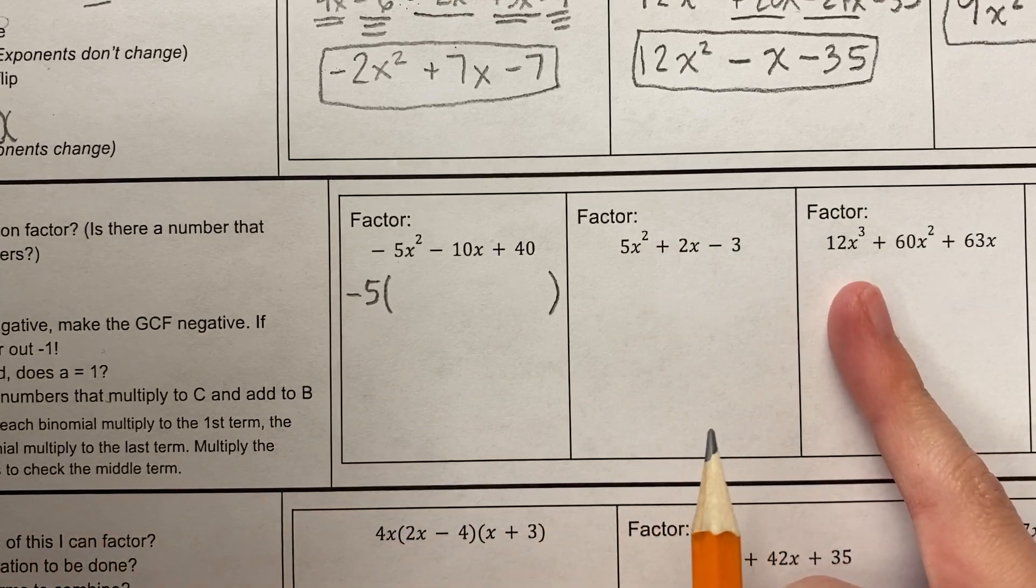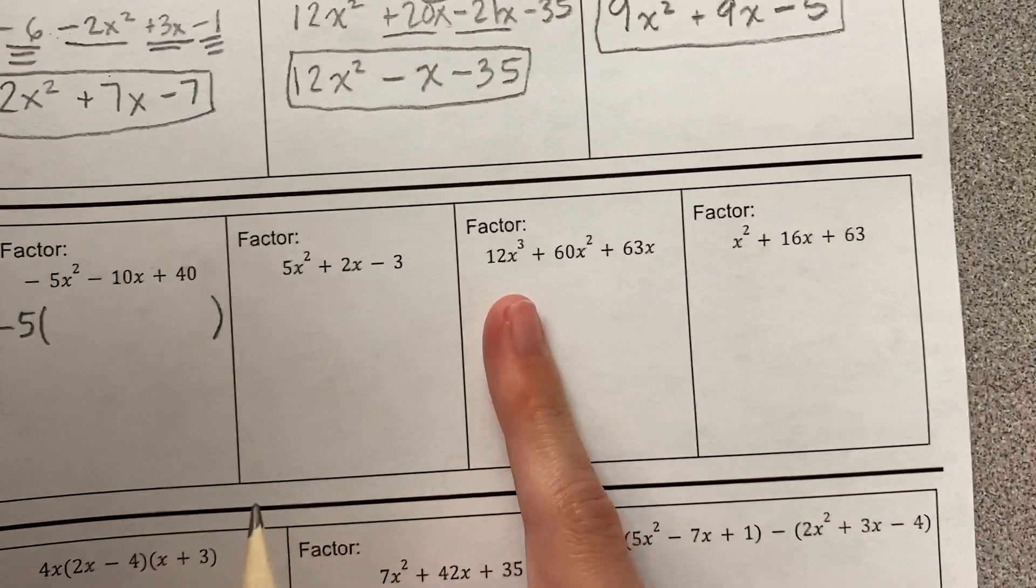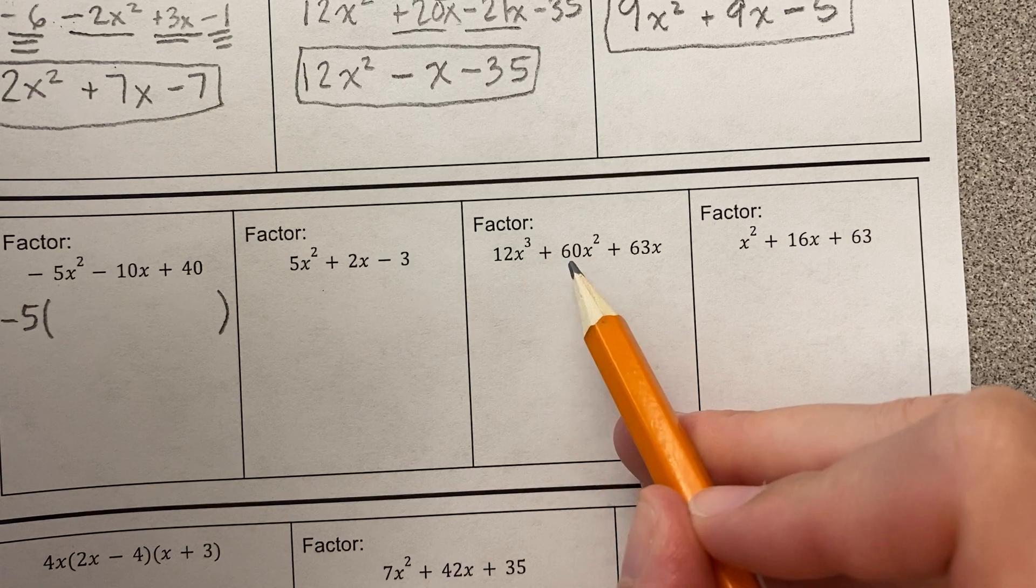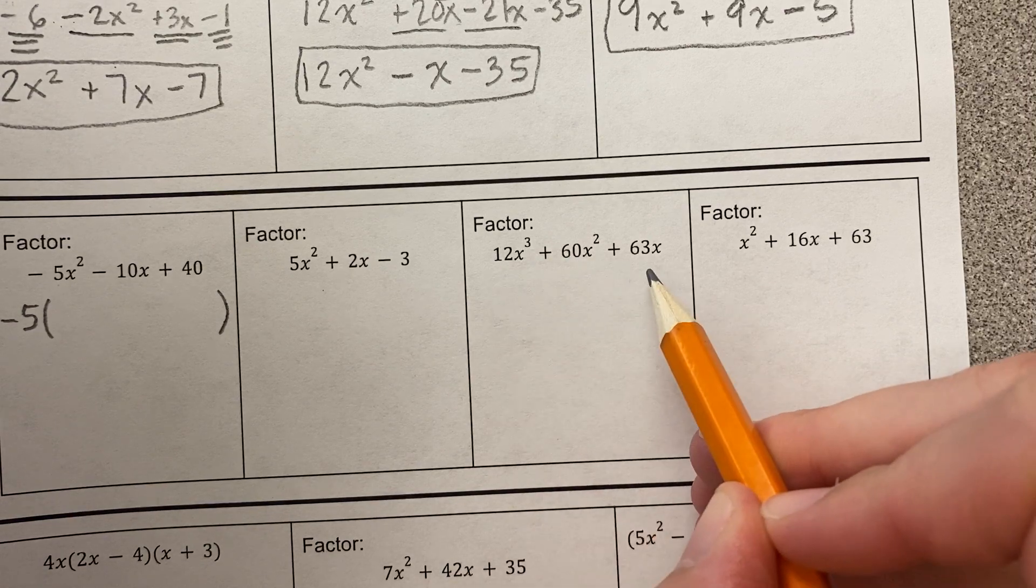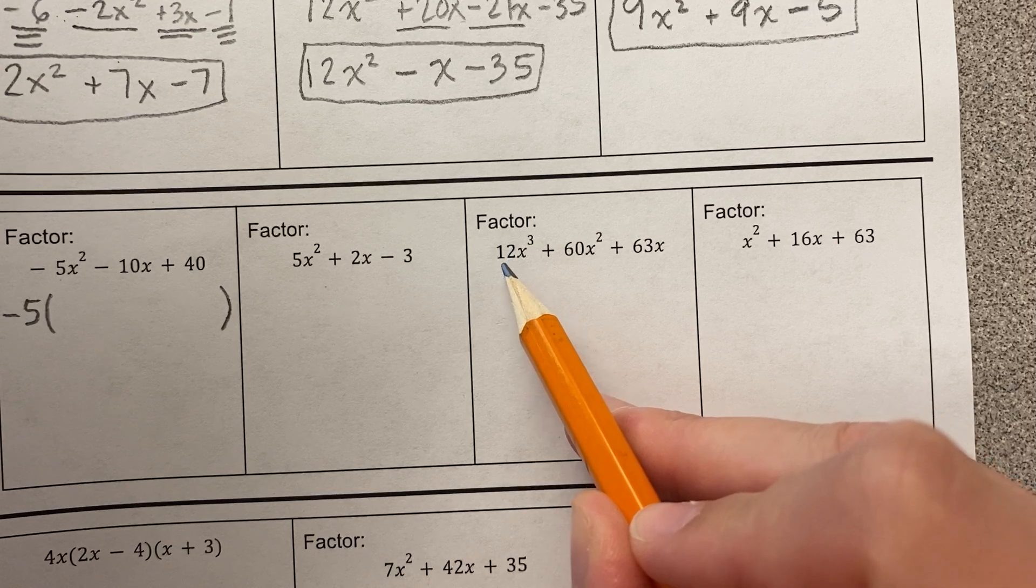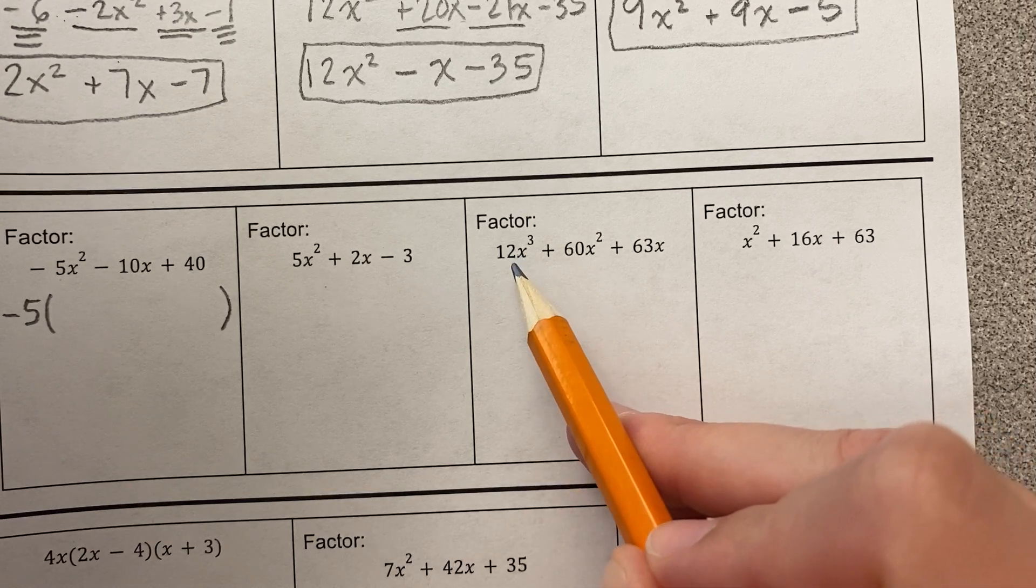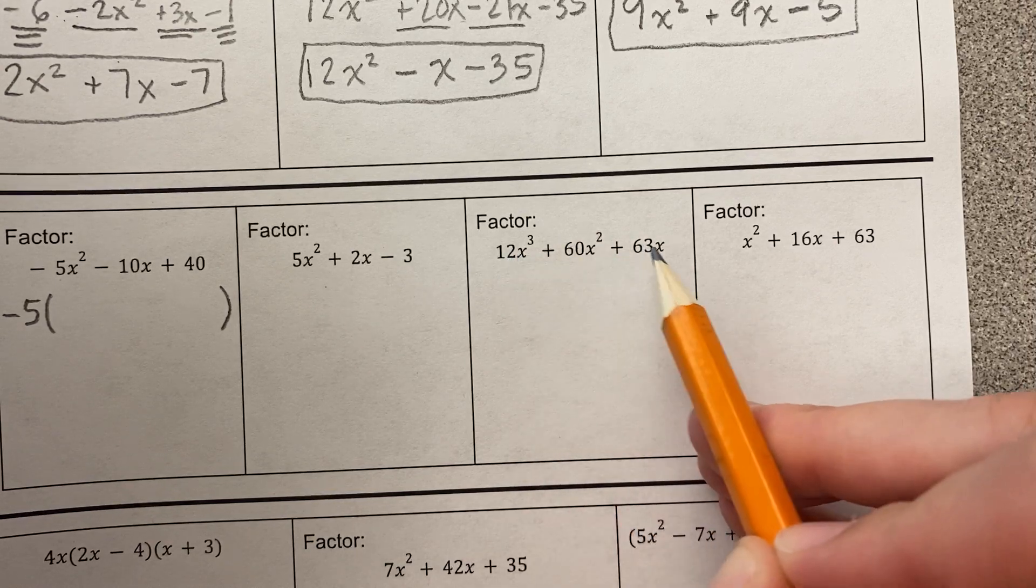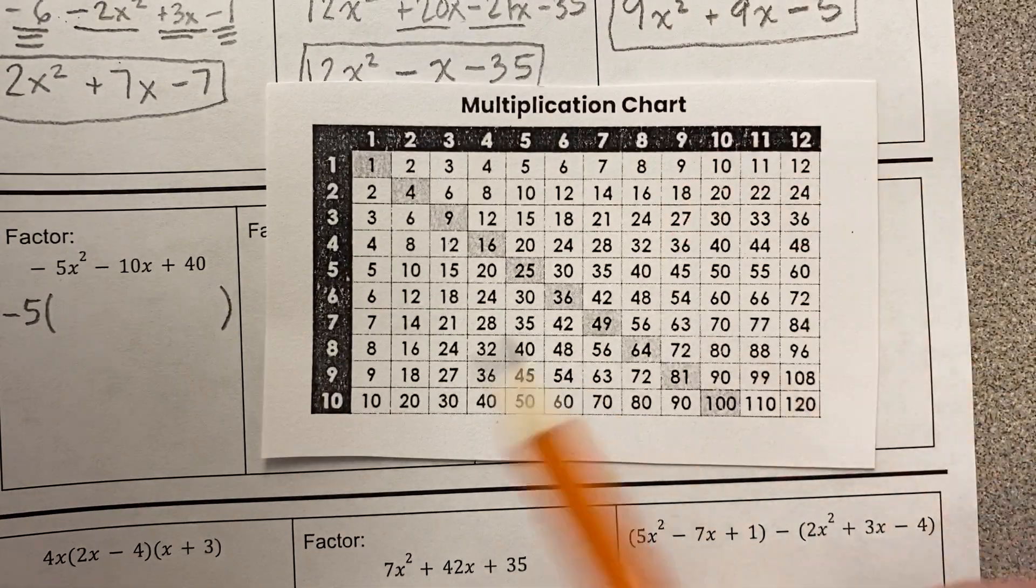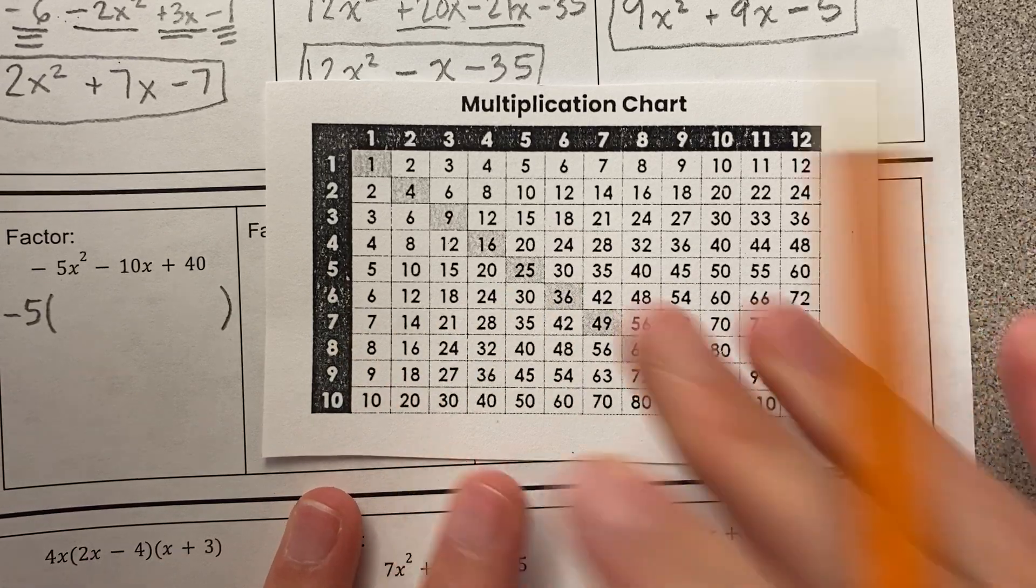Is there a GCF here? Is there a number that multiplies to twelve, sixty, and sixty-three? Yeah, there is, definitely. Let's take a look. Does twelve multiply to sixty? Yeah. Does twelve multiply to sixty-three? No. What about the next biggest factor of twelve? One times twelve is twelve. Two times six is twelve, so six, does six multiply to sixty? Yes. Does six multiply to sixty-three? Oh no, it doesn't. And if I'm not sure, I can look here and see six doesn't multiply to sixty-three.